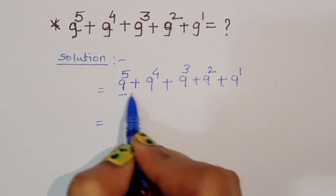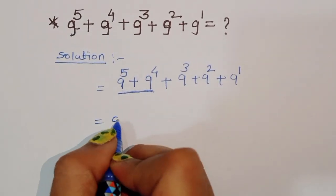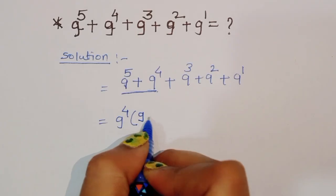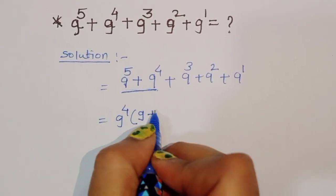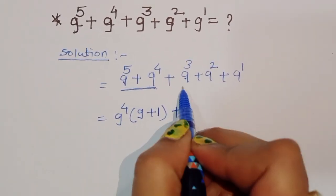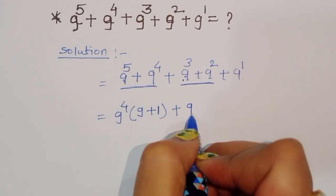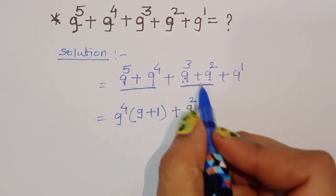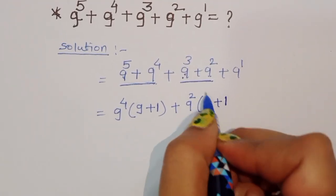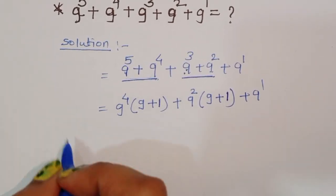So, we can take 9 power 4 common here. When we take 9 power 4 common, then 9 power 4 plus 1 gives us power 5. So this gives 9 power 4 times 9 plus 1. In the next terms, 9 power 3 plus 9 power 2, we can take 9 power 2 common. When taking 9 power 2 common, we are left with 9 plus 1 plus 9 power 1, that is 9.